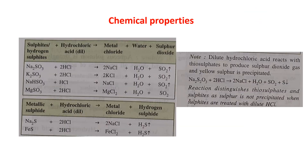When HCl reacts with sulfite or bisulfite salts — such as Na₂SO₃ or NaHSO₃ — it produces a chloride salt, water, and SO₂ gas. For example: Na₂SO₃ + 2HCl → 2NaCl + H₂O + SO₂, and NaHSO₃ + HCl → NaCl + H₂O + SO₂.